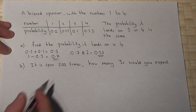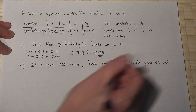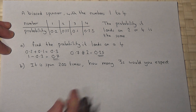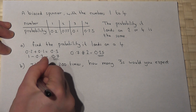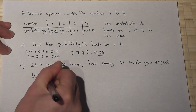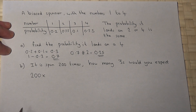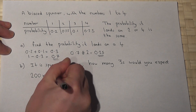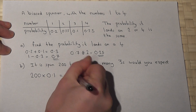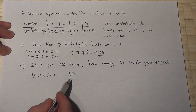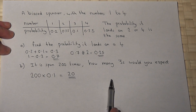In part B we're told the spinner is spun 200 times. How many 3's would you expect? You cannot be certain of the exact number, but roughly if it's done 200 times then the number of 3's you'd expect would be 200 multiplied by 0.1. This is the expected number, which is 20. So on average we'd expect around about 20 threes to occur if it's spun 200 times.